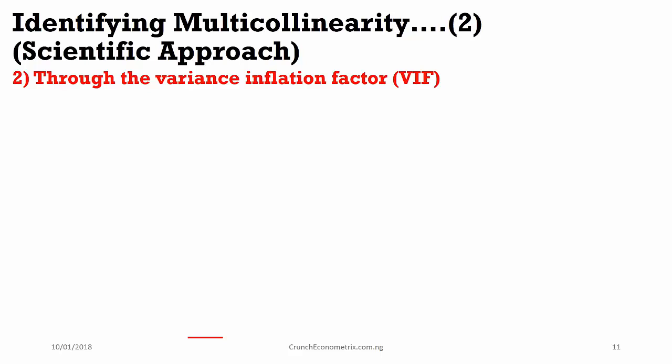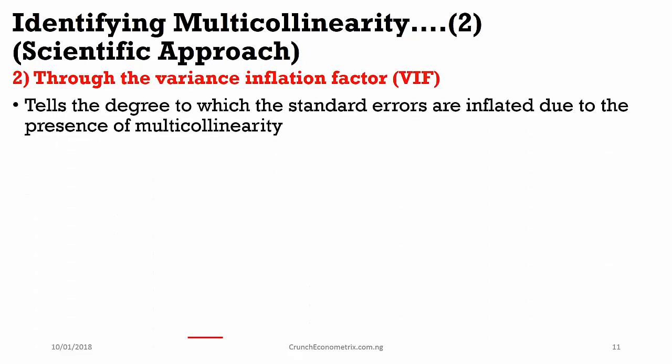Another way by which you can identify it scientifically is through the variance inflation factor. The variance inflation factor, or VIF for short, is just the inverse of the tolerance level. It tells you the degree to which your standard errors are inflated due to the presence of multicollinearity.